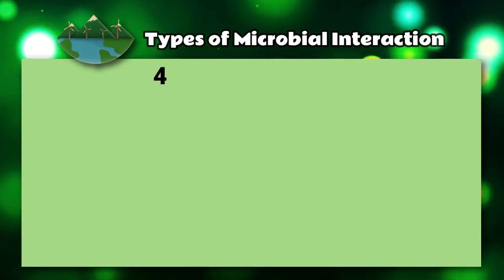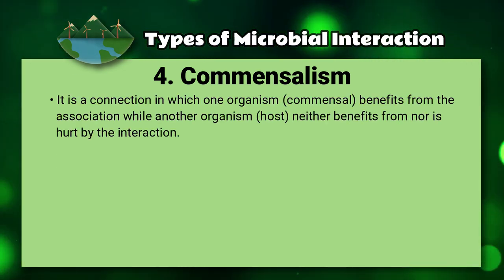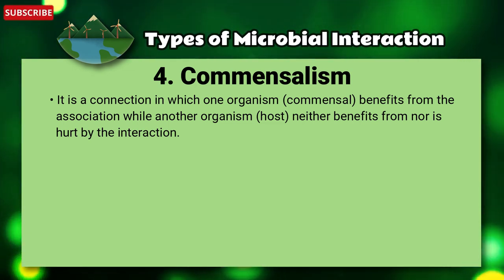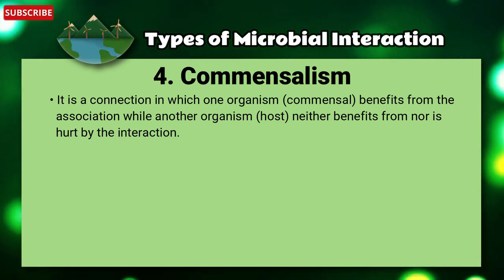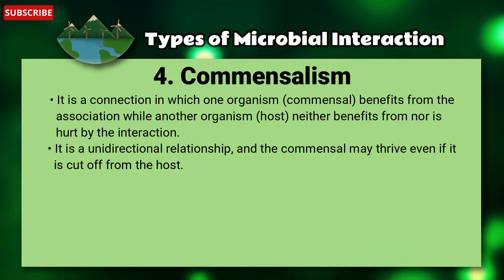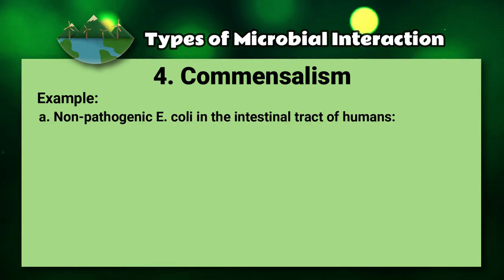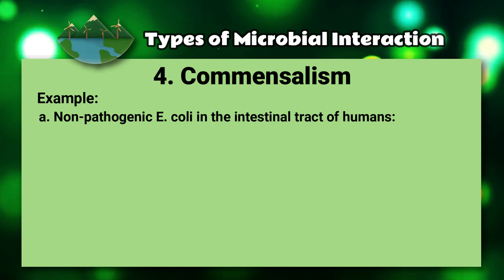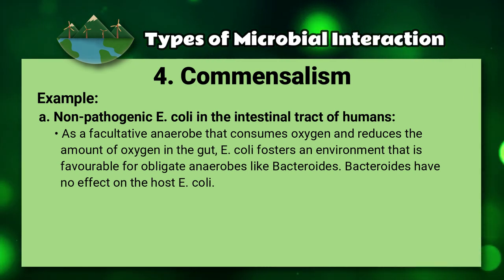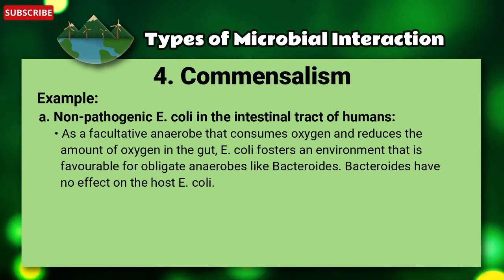Number four: commensalism. It is a connection in which one organism (commensal) benefits from the association while another organism (host) neither benefits from nor is harmed by the interaction. It is a unidirectional relationship, and the commensal may strive even if cut off from the host. One example is non-pathogenic E. coli in the intestinal tract of humans. As a facultative anaerobe that consumes oxygen, E. coli reduces oxygen in the gut, fostering an environment favorable for obligate anaerobes like Bacteroides.